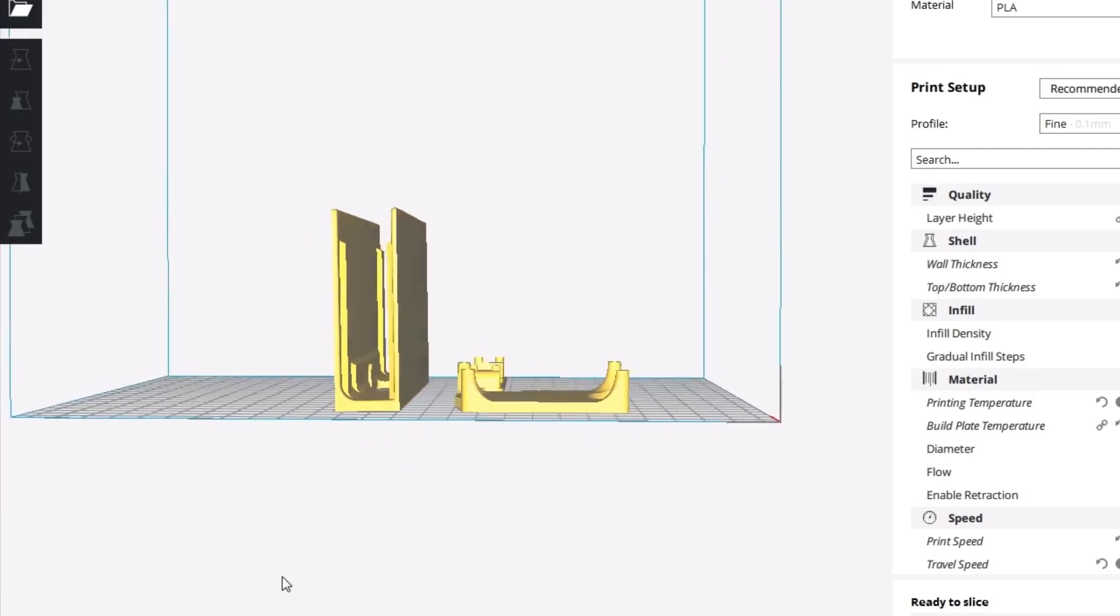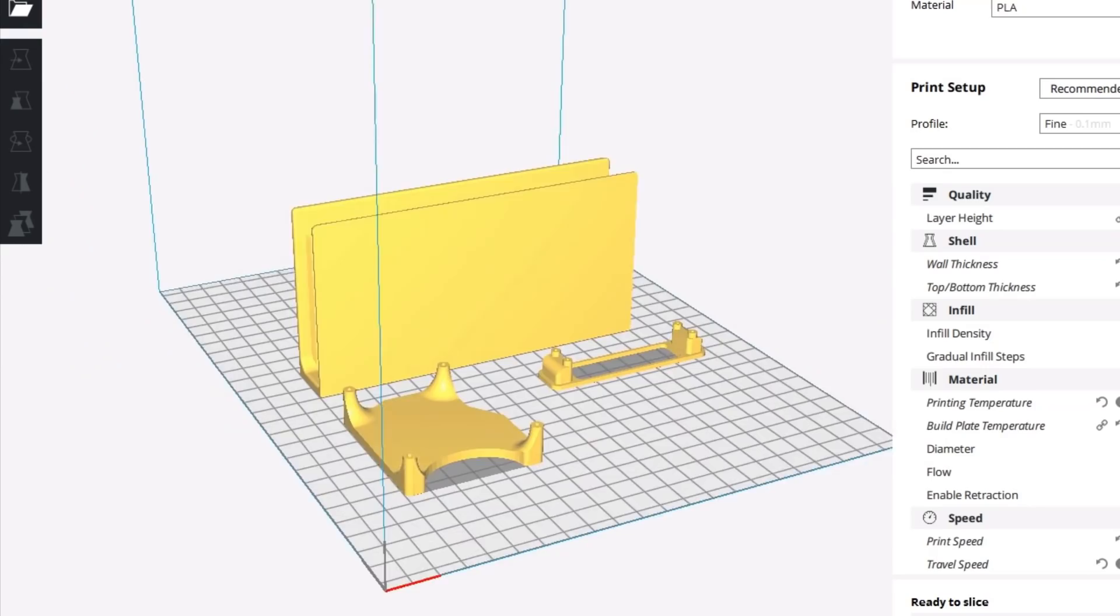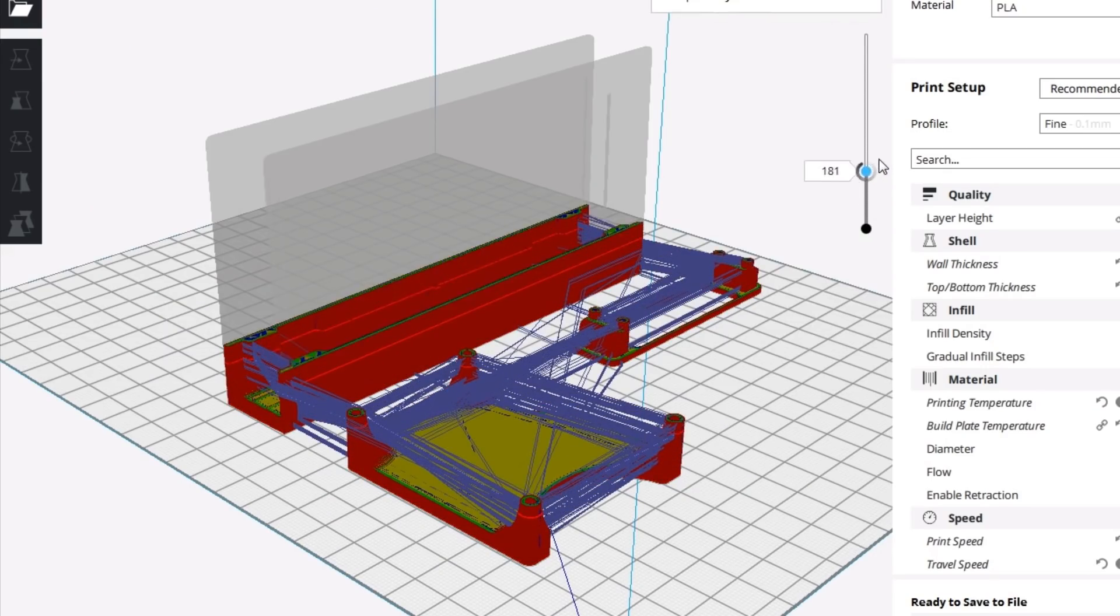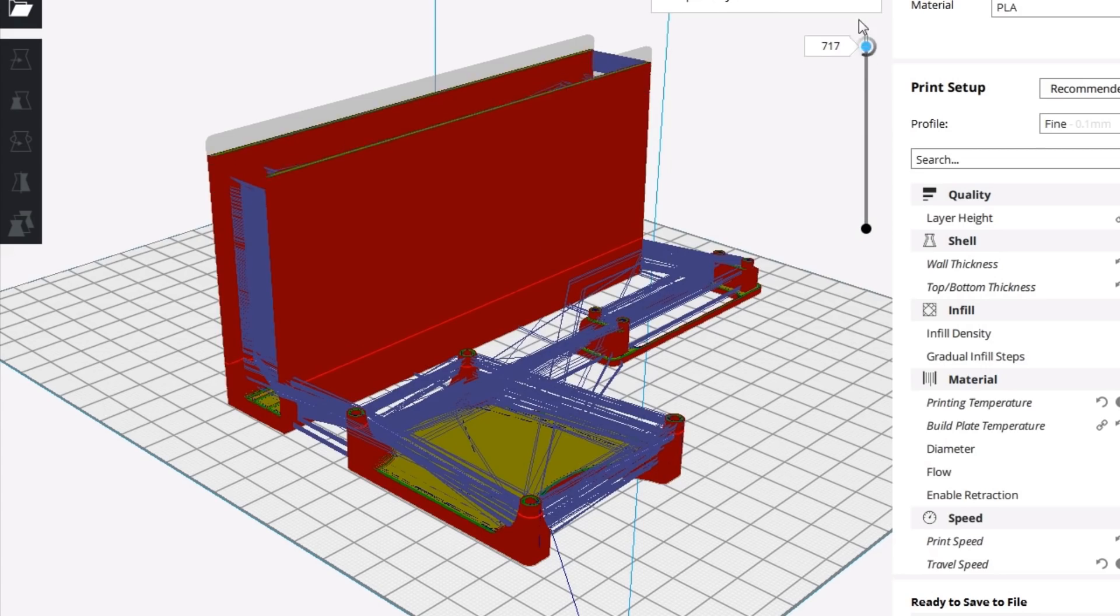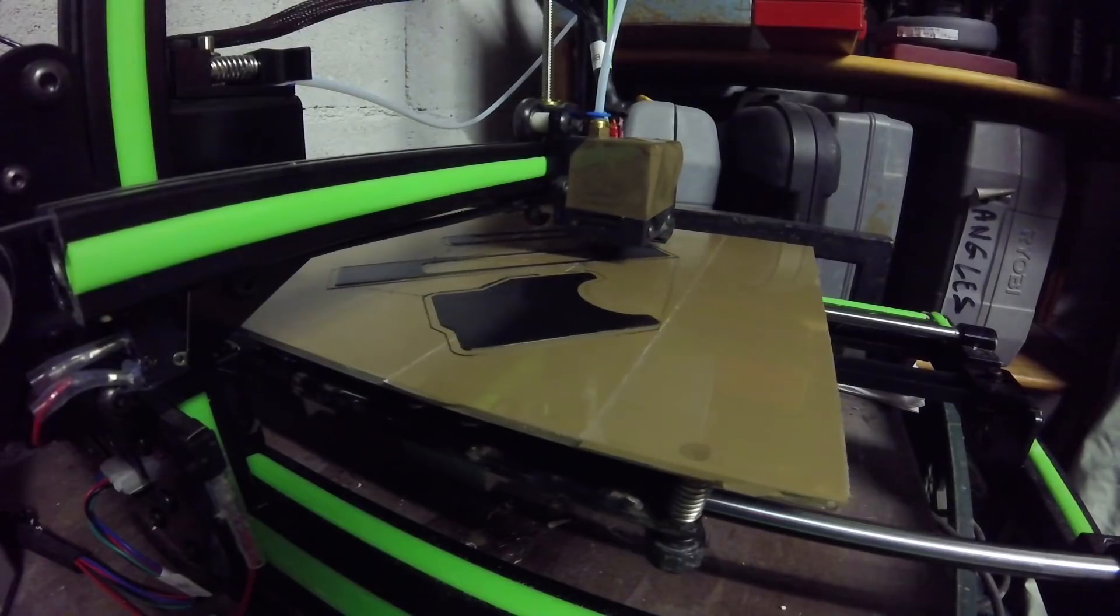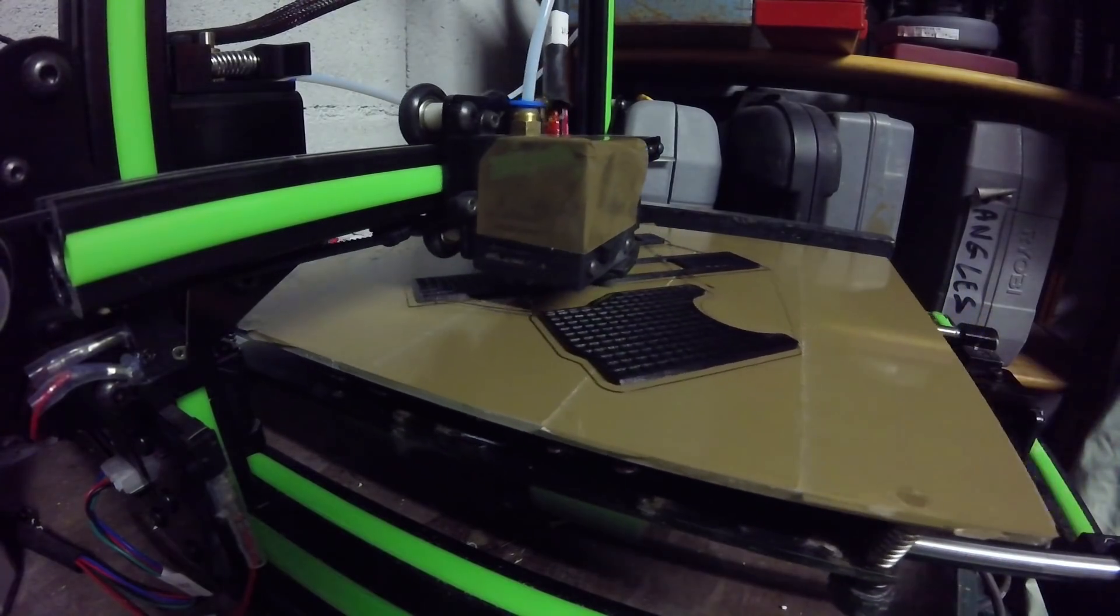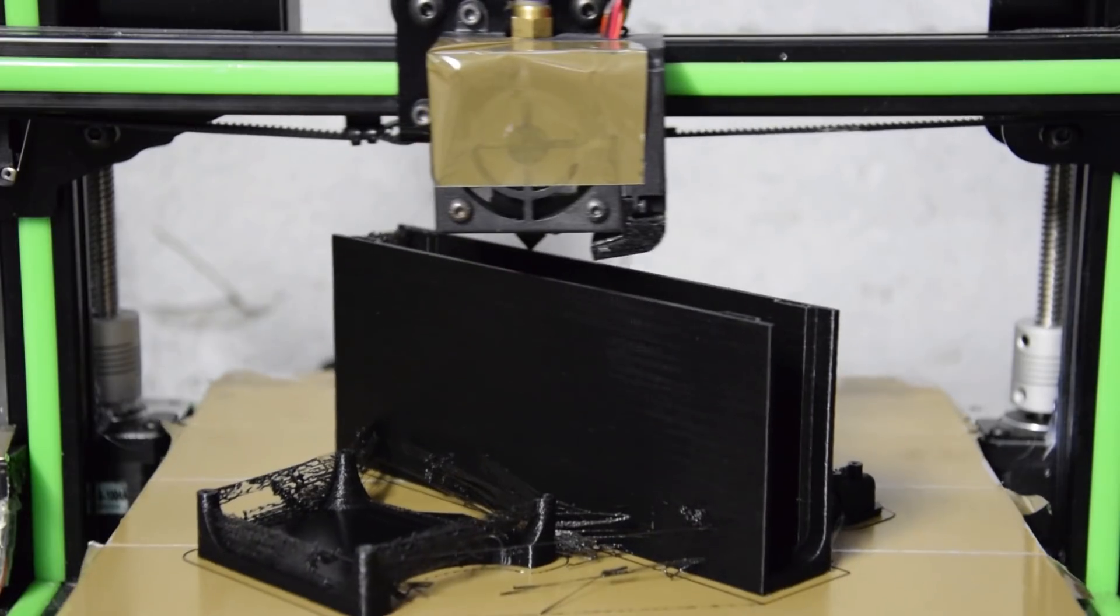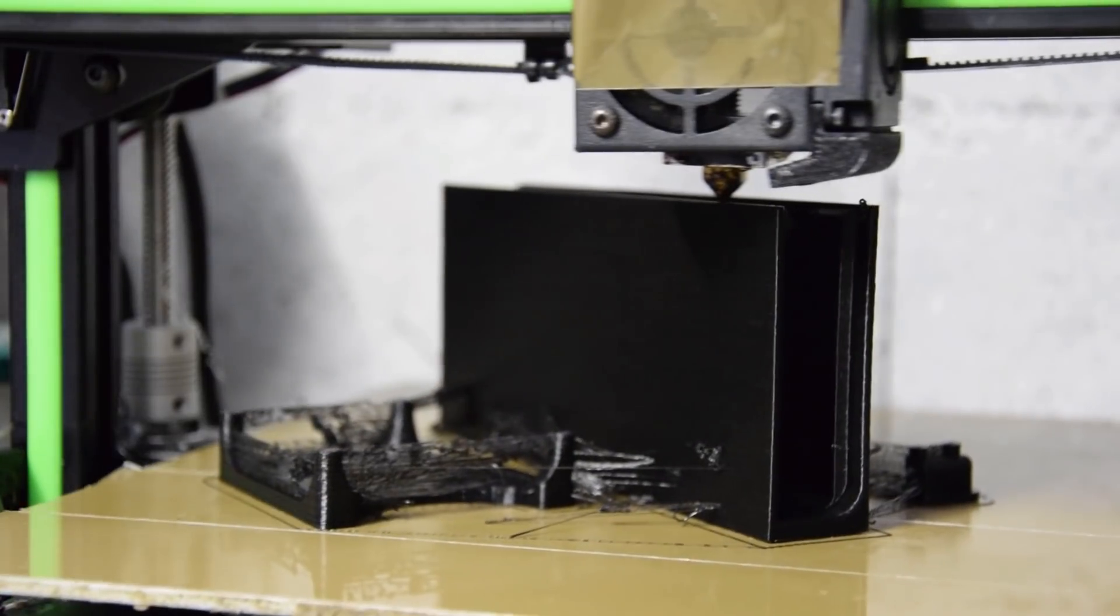Once imported in the slicer, you can decide the quality of the print, the temperature, and all sorts of things. For the final print, a layer height of 0.1 millimeters will give a smoother end result. The density is set to 20 percent to save time, and the walls are set to 1.2 millimeters for increased sturdiness of the print.